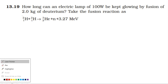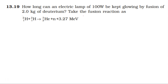For a 100 watt power lamp using 2 kilogram of deuterium, we need to find the time. Using the relation: power equals energy divided by time, therefore energy is equal to power into time. Energy equals 100 watt multiplied by time.